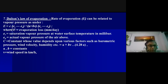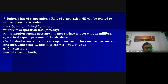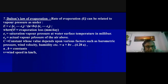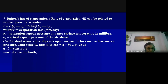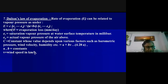In this equation: E is the evaporation rate in millimeters per day or per hour; Es is the saturation vapor pressure at the water surface, expressed in millibars; Ea is the actual vapor pressure of the air above the water surface. C is a constant depending on barometric pressure, wind velocity, humidity, etc. C equals A plus B times V, where A and B are constants and V is wind velocity in kilometers per hour.